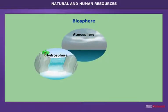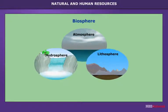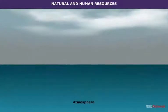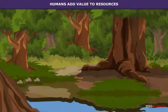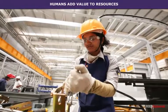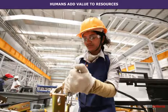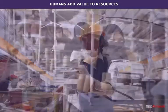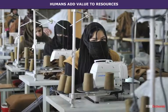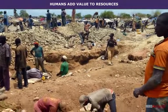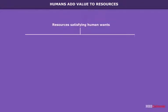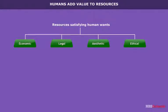The materials in the Earth's crust and its domains — lithosphere, hydrosphere, and atmosphere — are referred to as resources. Humans add value to resources. By definition, resources are a collective means of satisfying human wants. They are obtained from our environment either directly or by application of human skills and technology. Human beings, by means of their skills, add value to resources. Four types of value addition associated with resources are economic, legal, aesthetic, and ethical.